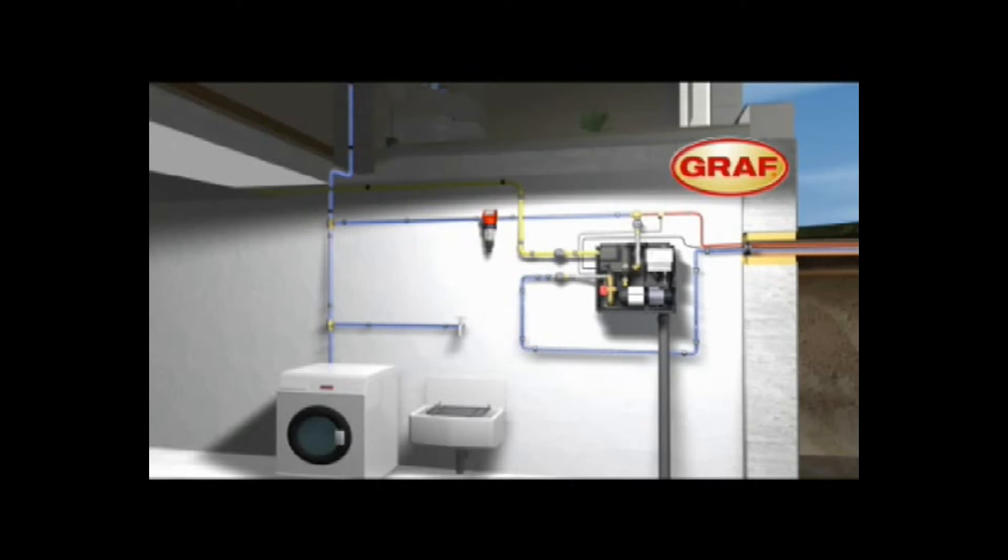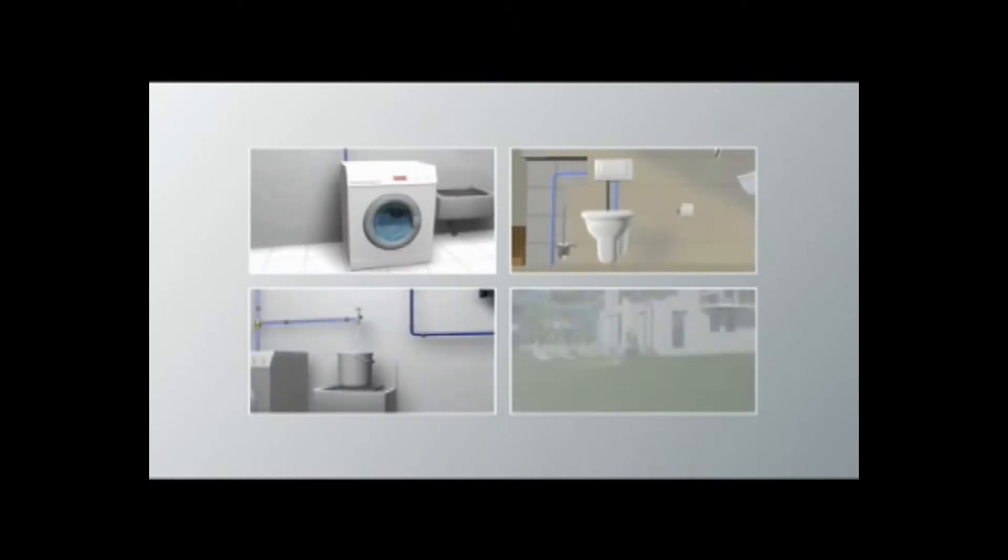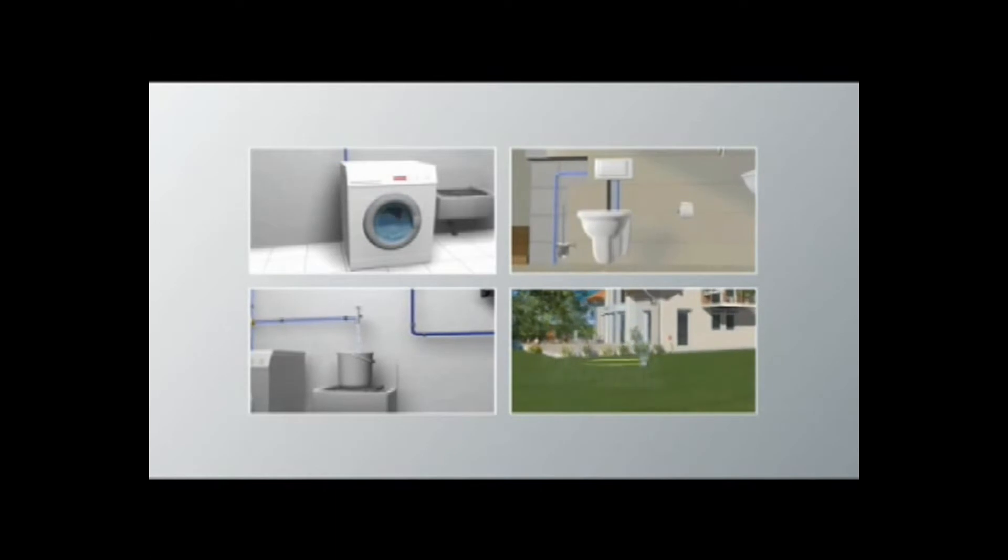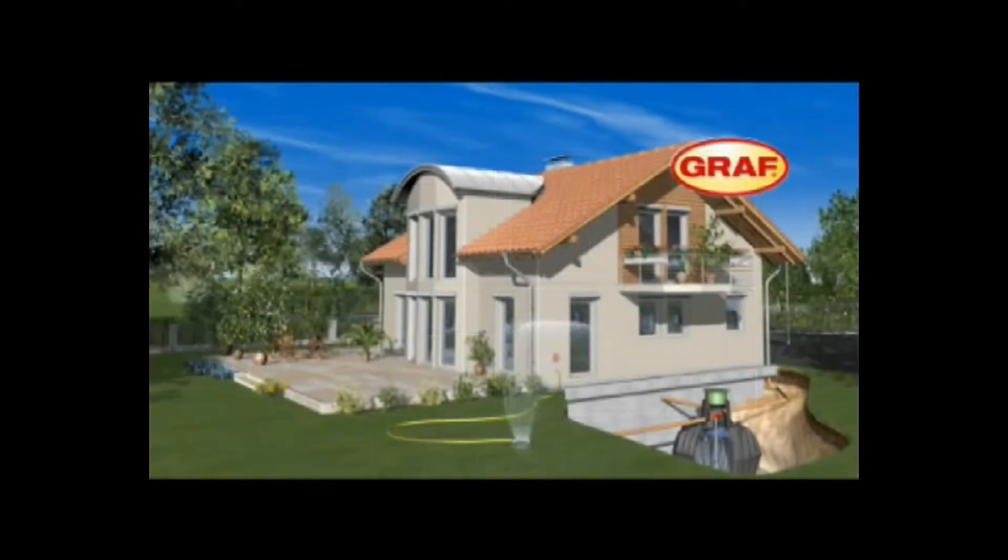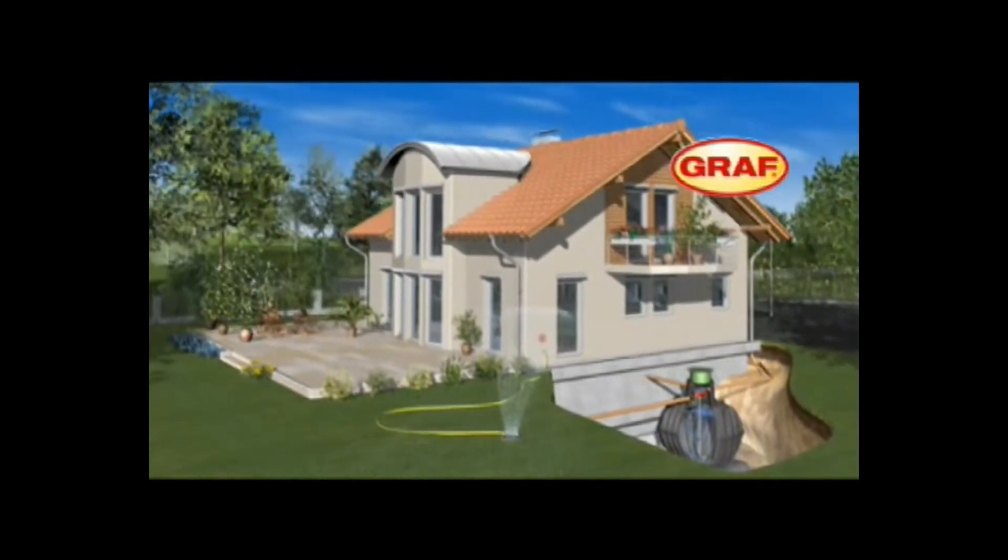Rainwater can be used in many applications where the water cannot be ingested. This includes laundry, toilet flushing, general cleaning in the home and garden irrigation. This way you can reduce your mains water consumption by up to 50% and improve the environment, simply by using the professional GRAF rainwater harvesting system.